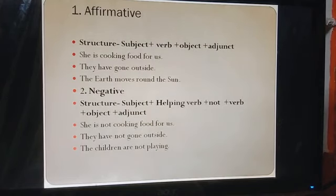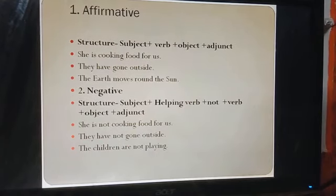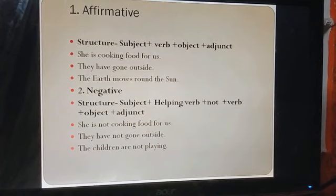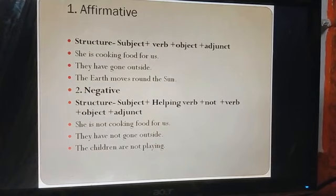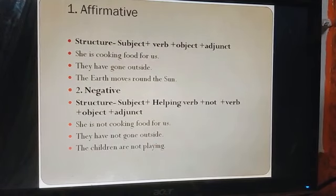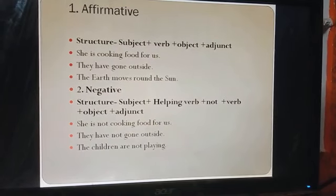First of all, affirmative sentence, or declarative sentence, or assertive sentence — इनको सब आप एक category में रख सकते हैं। These sentences follow a specific pattern: first of all we use a subject, फिर आती है verb — helping verb हो सकती है और उसके साथ main verb — उसके बाद object, और इसमें कोई adjunct, कोई complement, कोई additional word हो सकता है। जैसे: 'She is cooking food for us' — she (subject), is (helping verb), cooking (main verb), food (object), for us (adjunct). Similarly: 'They have gone outside,' 'The earth moves round the sun.'